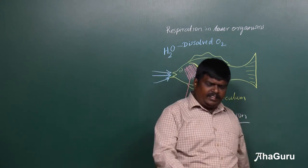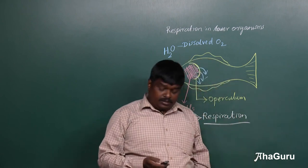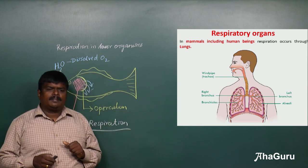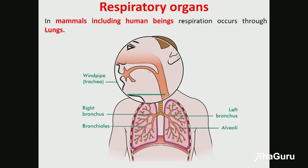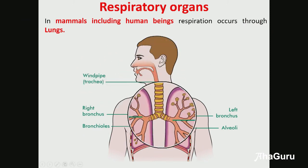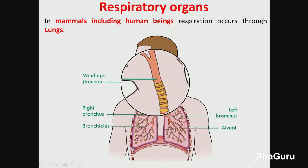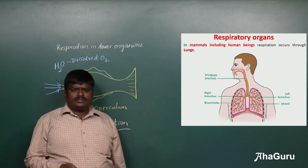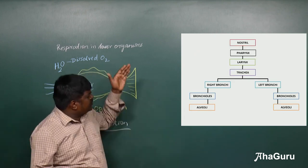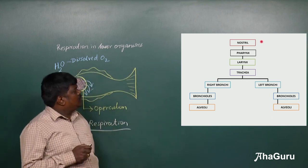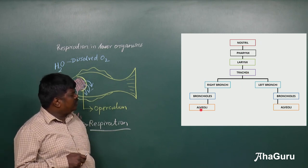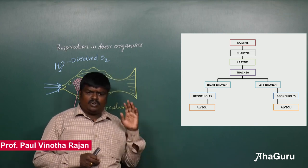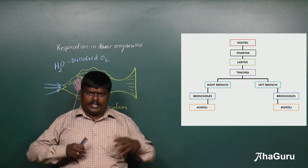Whereas in higher organisms, in humans, there are well-developed structures that help in the process of respiration. We call this system the respiratory system. The human respiratory system contains many structures: nostril, pharynx, larynx, trachea, bronchi, bronchioles, and alveoli — all involved in the human respiratory system.